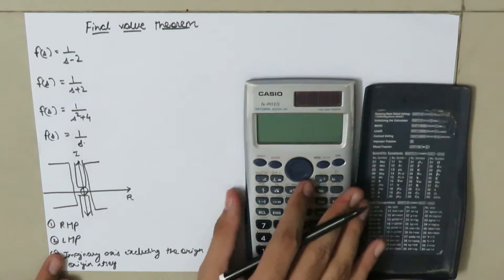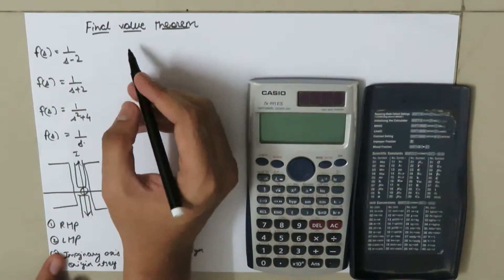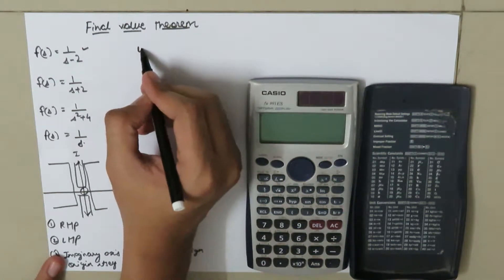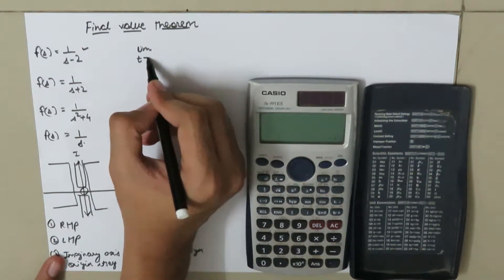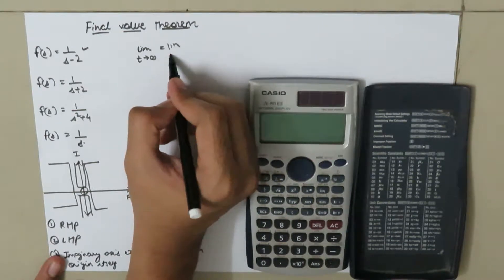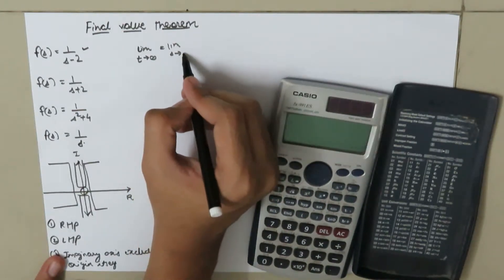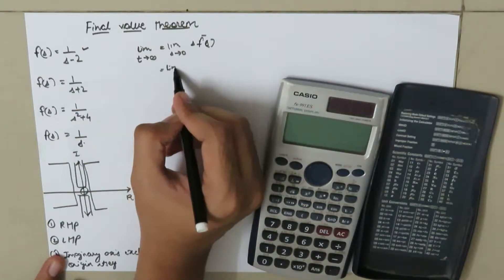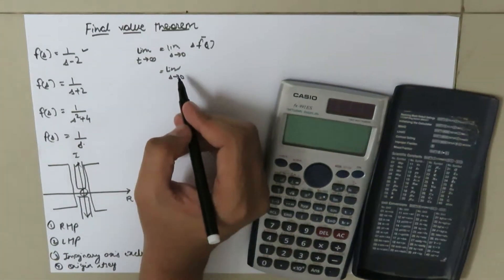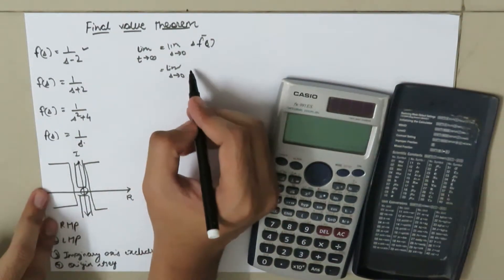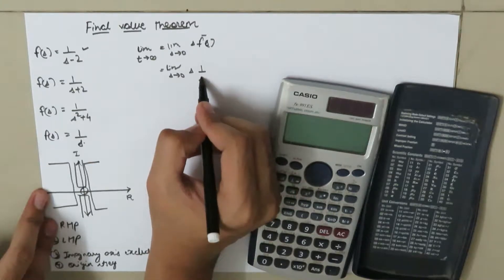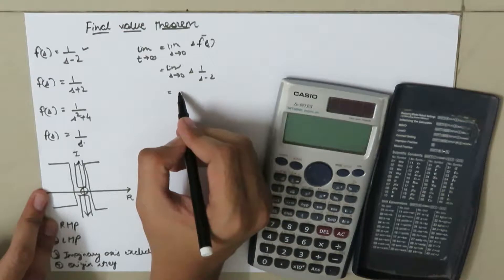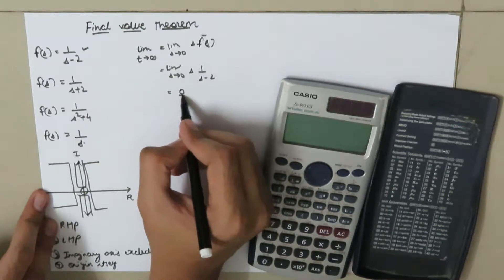Let's take the first transfer function and apply the final value theorem. The final value theorem states that the limit as t tends to infinity of f(t) equals the limit as s tends to 0 of s times F(s). Applying this to 1 over (s minus 2), the final value comes out to be 0.